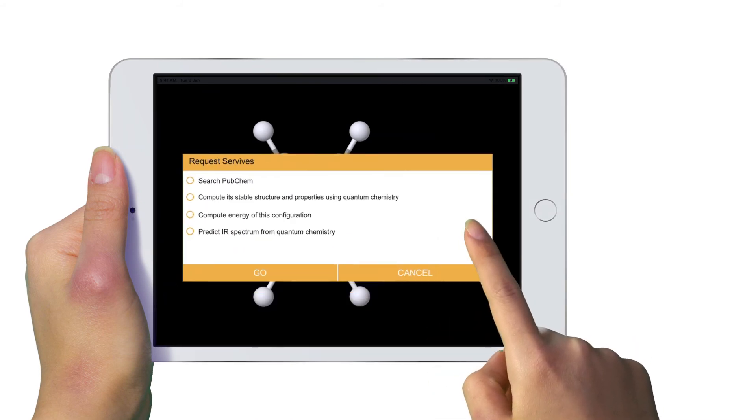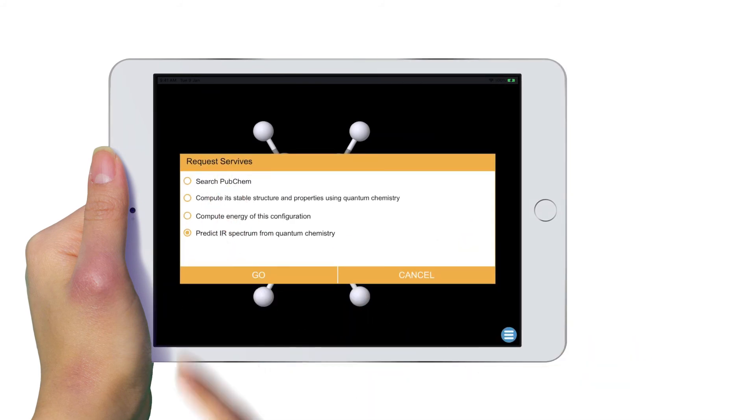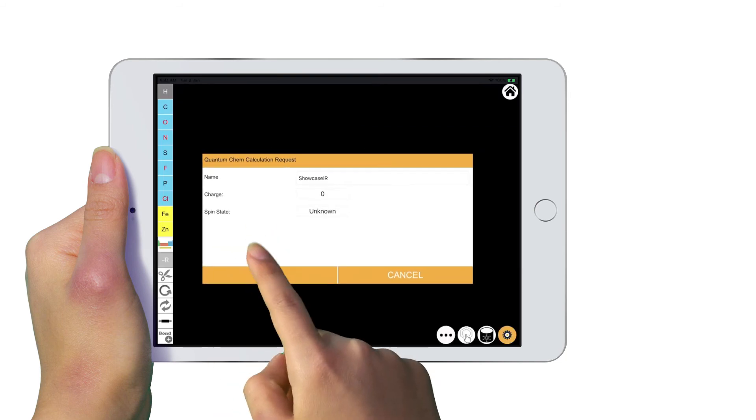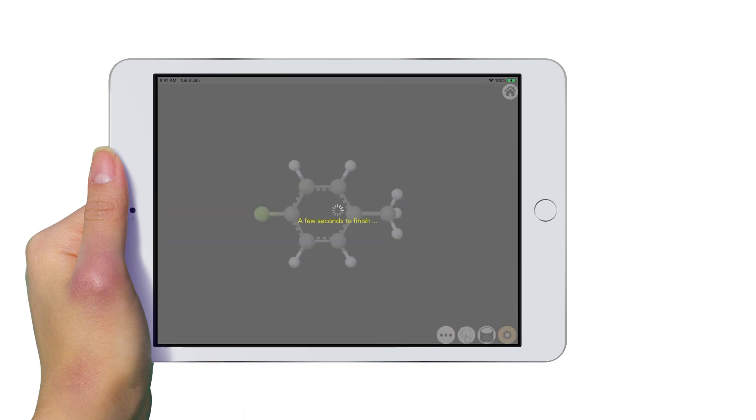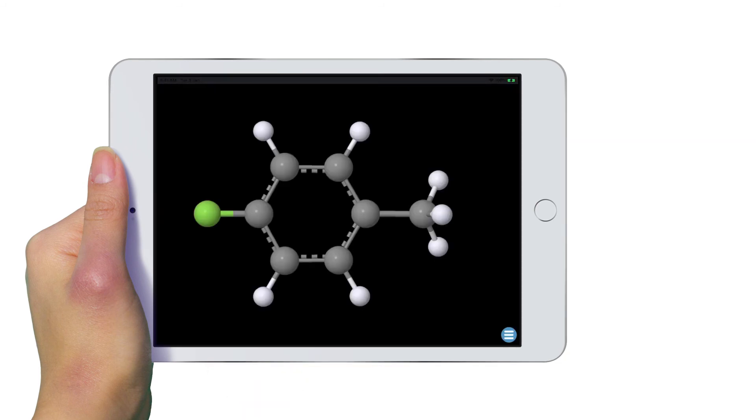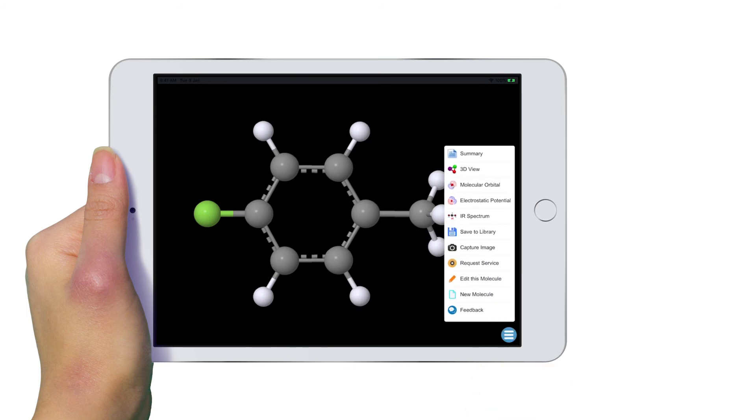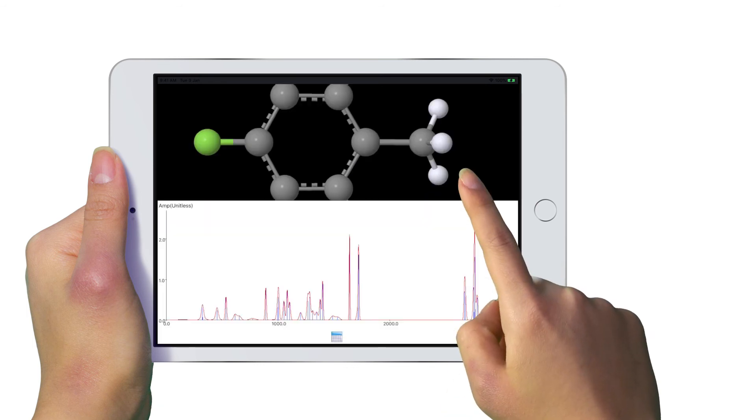Let's try another service. This time let's compute the molecule's IR spectrum. When the job is completed, the results will refresh the graphic window. Select the menu button and you will see the IR spectrum option. Select it.